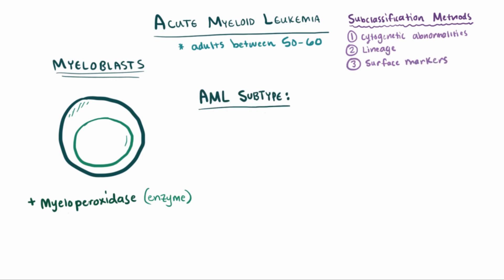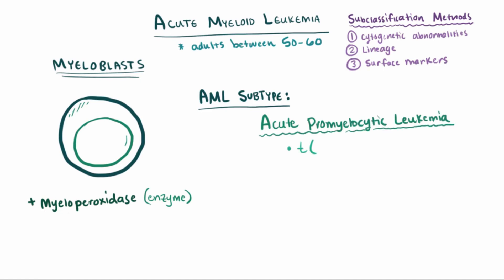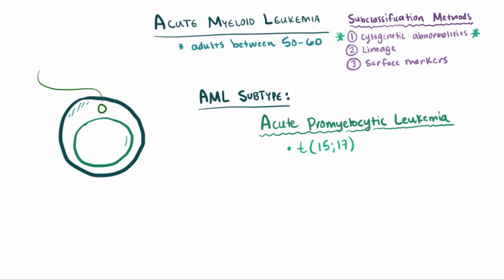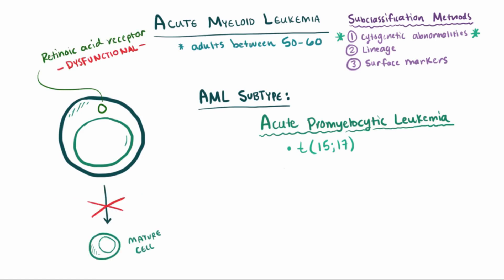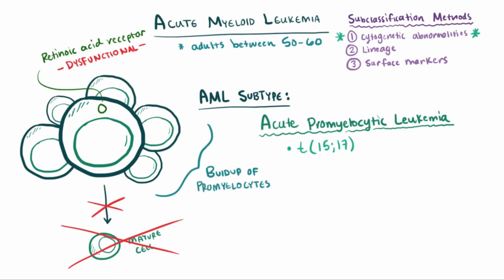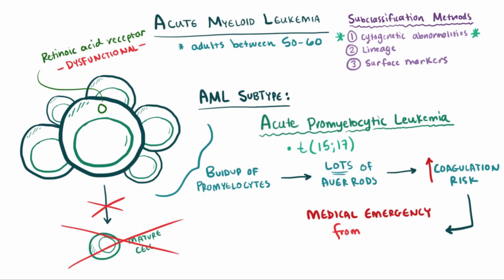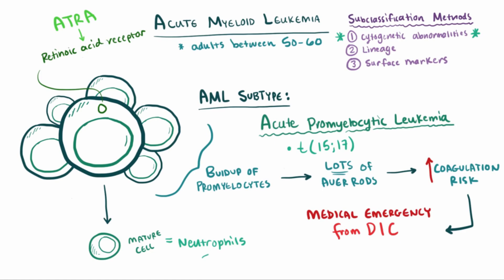One important subtype of AML to be aware of is acute promyelocytic leukemia, characterized by translocation of chromosomes 15 and 17, or t(15;17). This translocation disrupts the retinoic acid receptor, which hurts the cell's ability to mature, and you get a buildup of promyelocytes. These cells tend to have a lot of Auer rods, which increases the chance of coagulation — making it a medical emergency due to the risk of disseminated intravascular coagulation, or DIC. One way to treat it is with all-trans retinoic acid, or ATRA, a derivative of vitamin A, which binds to the disrupted retinoic acid receptor and causes the blasts to mature into neutrophils, lifting the leukemic burden.